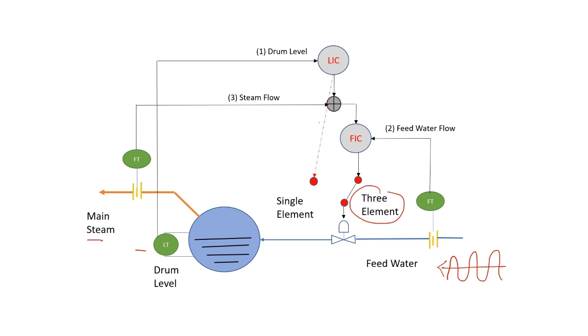In that case, there is a switching option that operator can select or that can be done automatically through logic. In that case, LIC directly sends the signal to the feed water control valve, and in this way the level of the boiler is maintained.